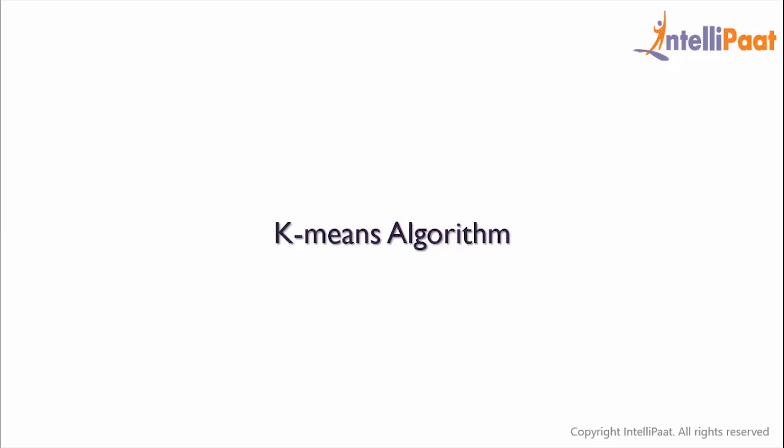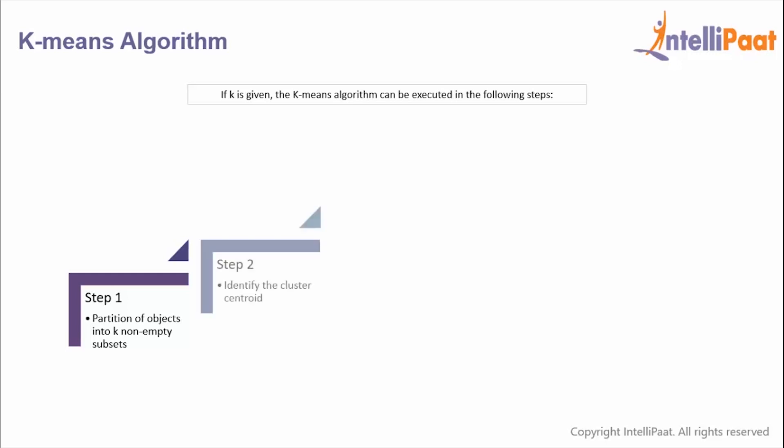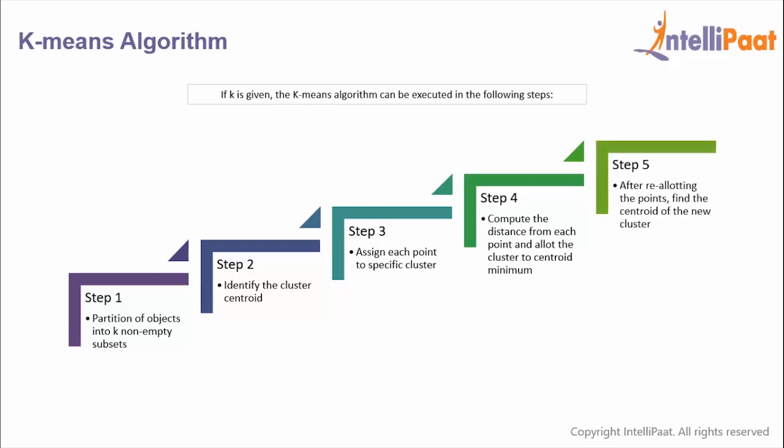Now let's move on to the algorithm of k-means clustering. If k is given, the k-means algorithm can be executed in the following steps: Step one, we partition the objects into k non-empty subsets. Step two, we identify the cluster centroids of the current partition. Step three, we assign each point to a specific cluster. Step four, we compute the distances from each point and allot points to the cluster where the distance from the centroid is minimum. In the last step, after reallotting the points, we find the centroid of the new cluster which is formed.